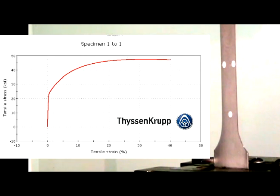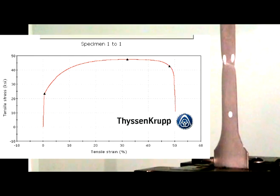Typical summary values determined are yield strength, ultimate tensile strength, and percent elongation. Other data, such as NNR values, can also be determined.